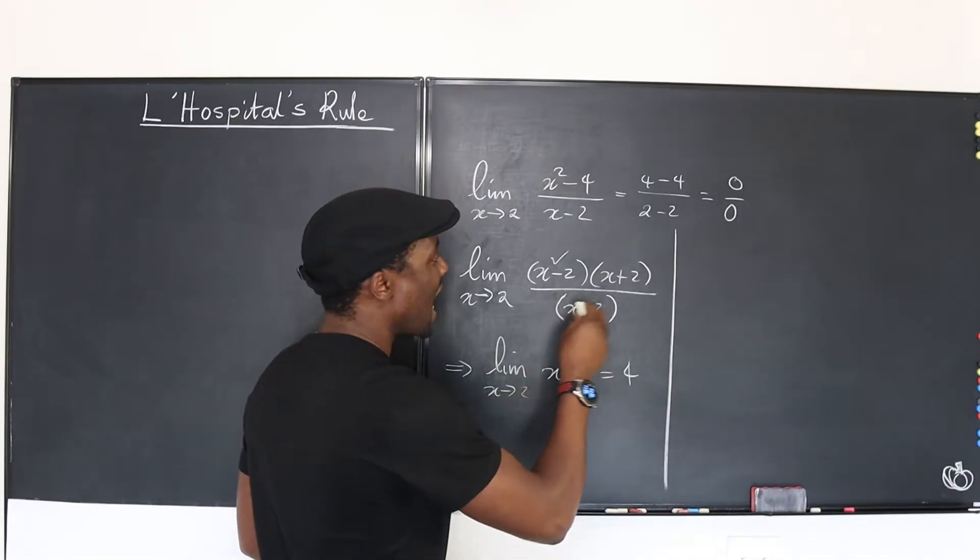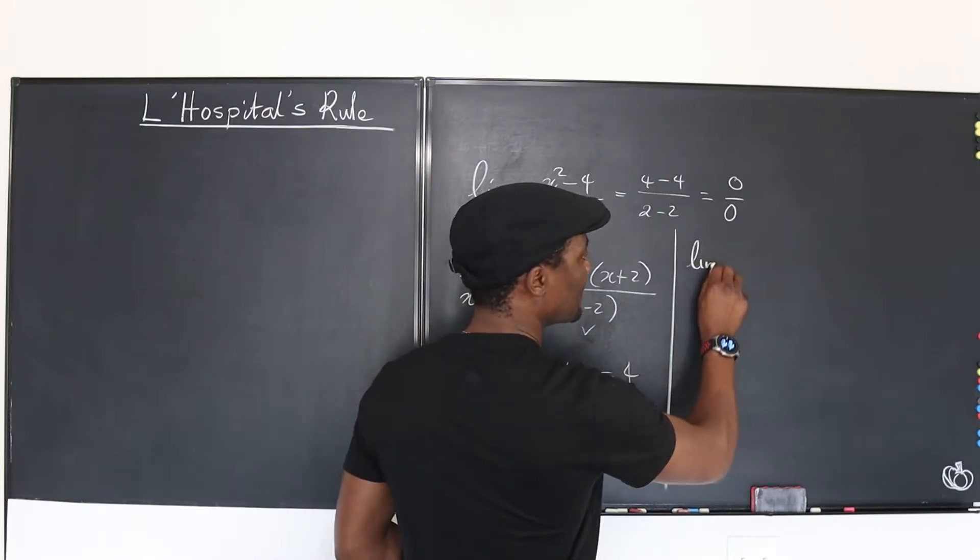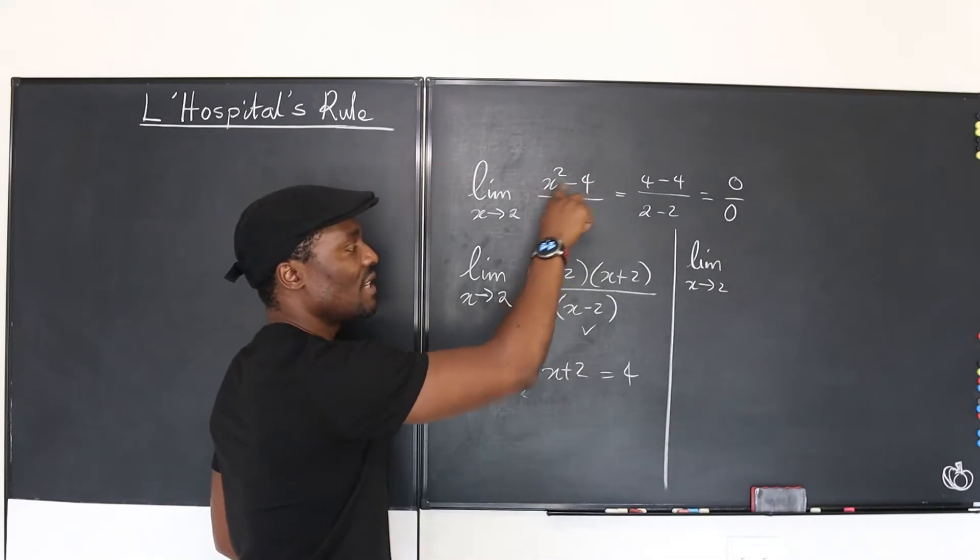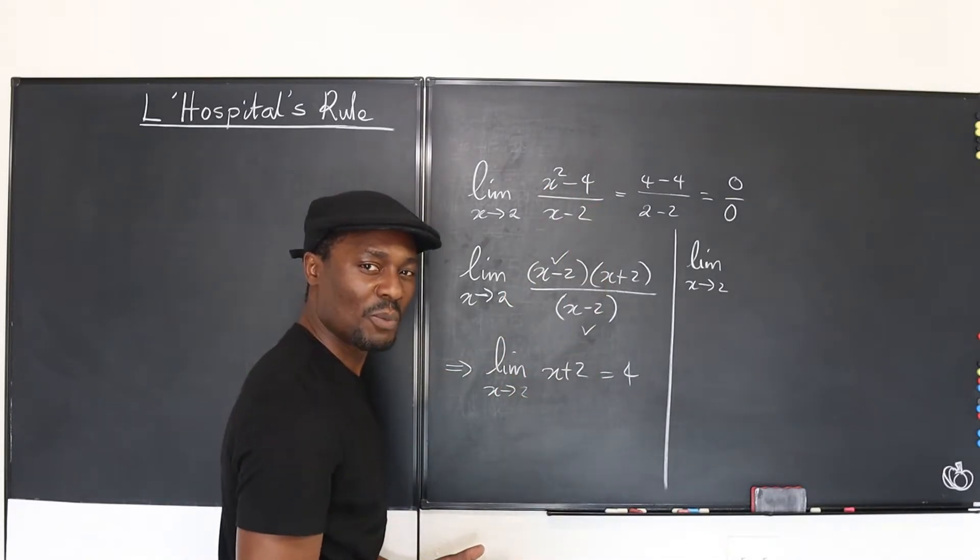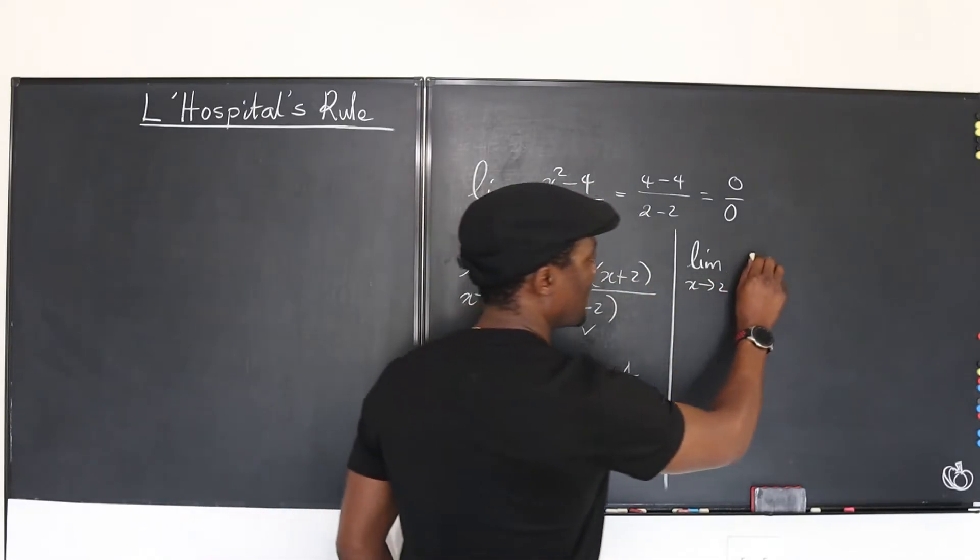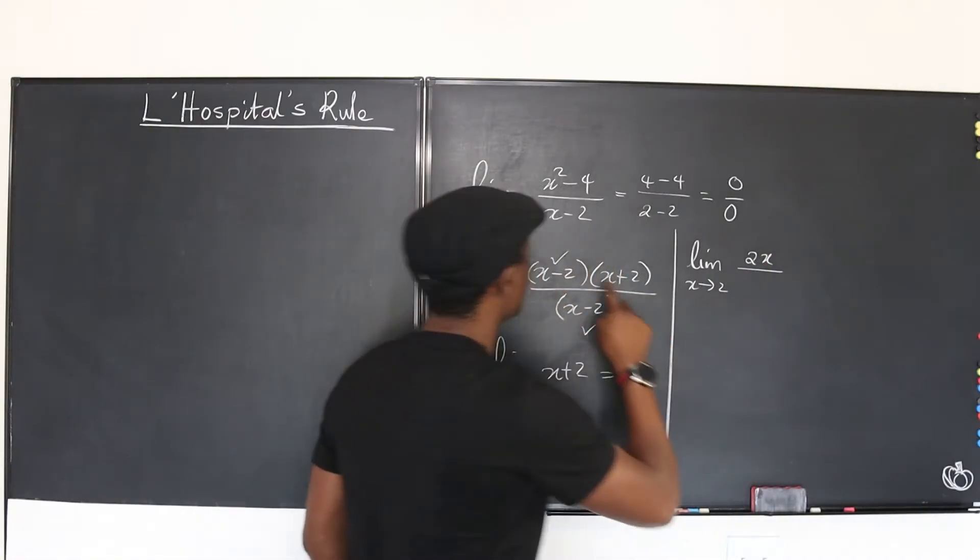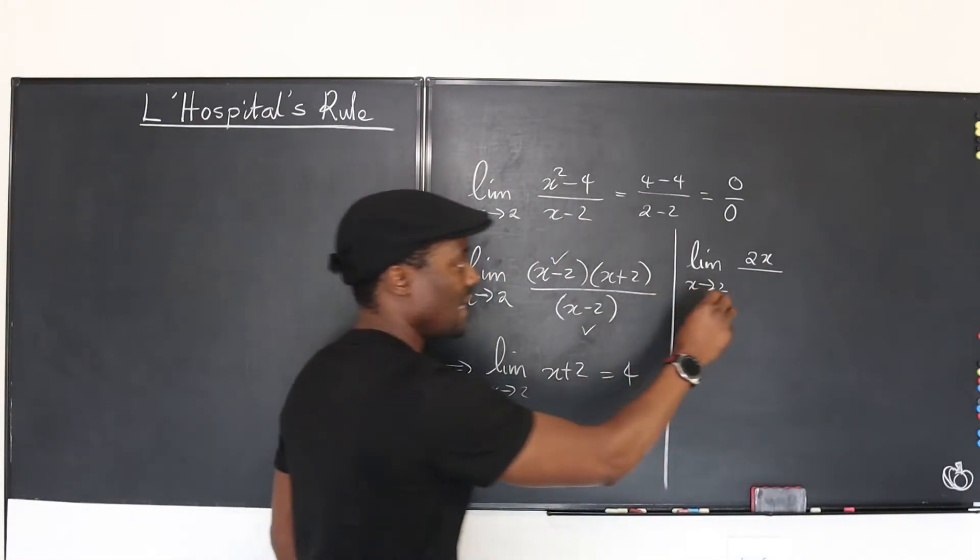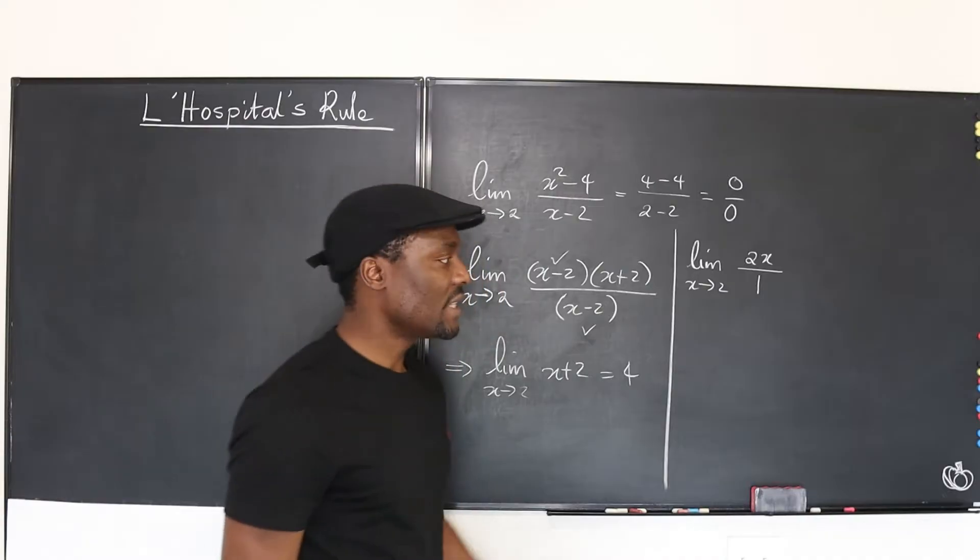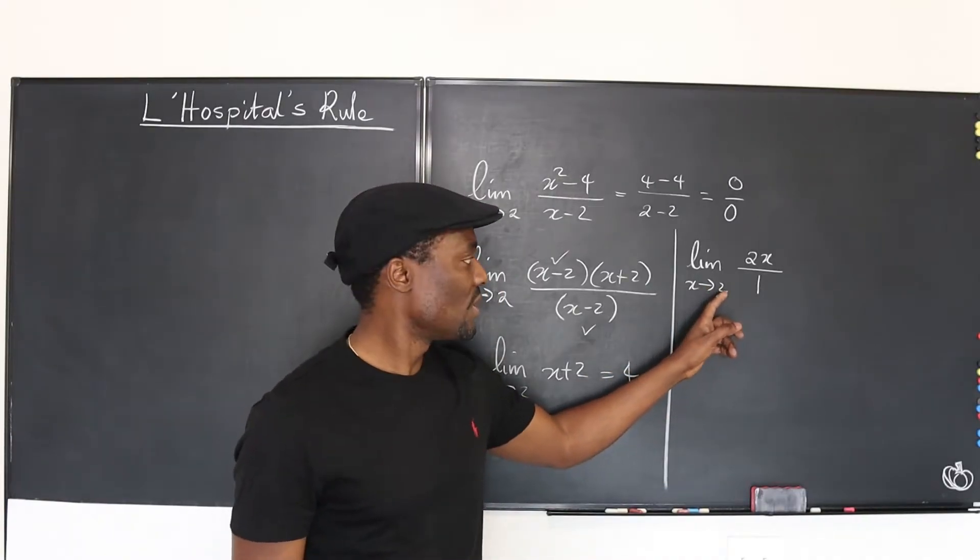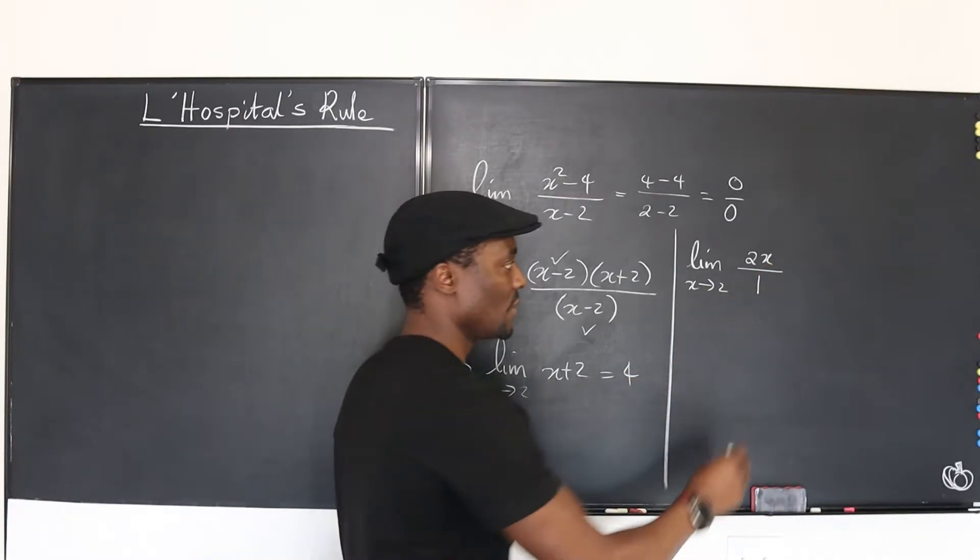So now, I'm going to say, I'm going to take the limit as x goes to 2, but I'm going to now differentiate the top. If I take the derivative of the top, what do I get? I get 2x. If I take the derivative of the bottom, what do I get? I get 1. Now, what is the direct substitution here? Put 2 here, you're going to get 4. So that's your answer.